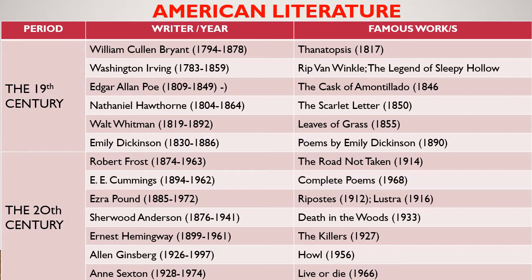Nathaniel Hawthorne became known for his symbolical tales. He was an American novelist, dark romantic, and short story writer. His works often focused on history, morality, and religion. He was born July 4, 1804, in Salem, Massachusetts, and died May 19, 1864, in Plymouth, New Hampshire. Next is Walt Whitman, 1819–1892, who showed the experiences of the common man in his works. He was an American poet, essayist, and journalist — a humanist who was part of the transition between transcendentalism and realism. Whitman is often called the father of free verse.